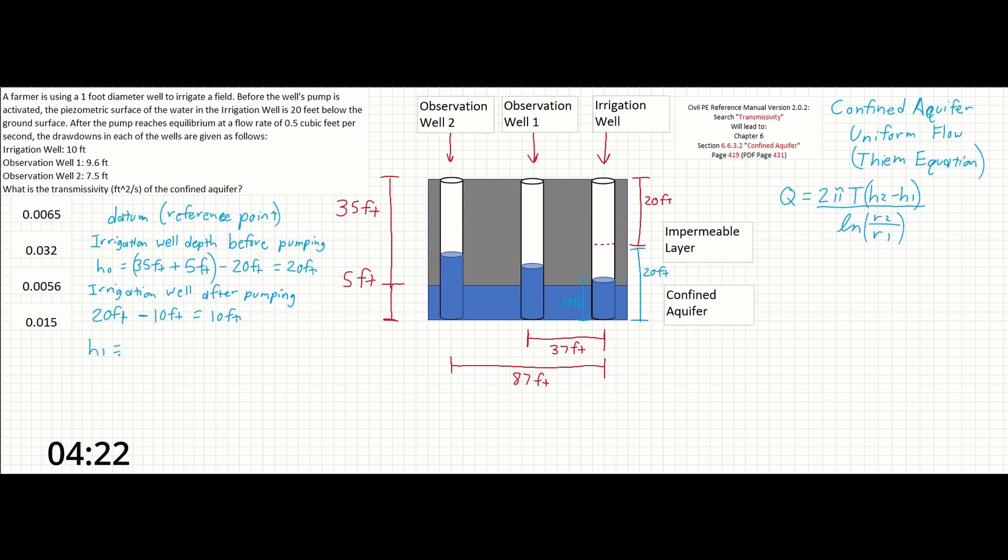H1, or the height of the water in the nearest observation well, observation well 1, after pumping begins, is going to be found by taking our reference point of 20 feet and subtracting the 9.6 foot drawdown from it, giving us 10.4 feet.